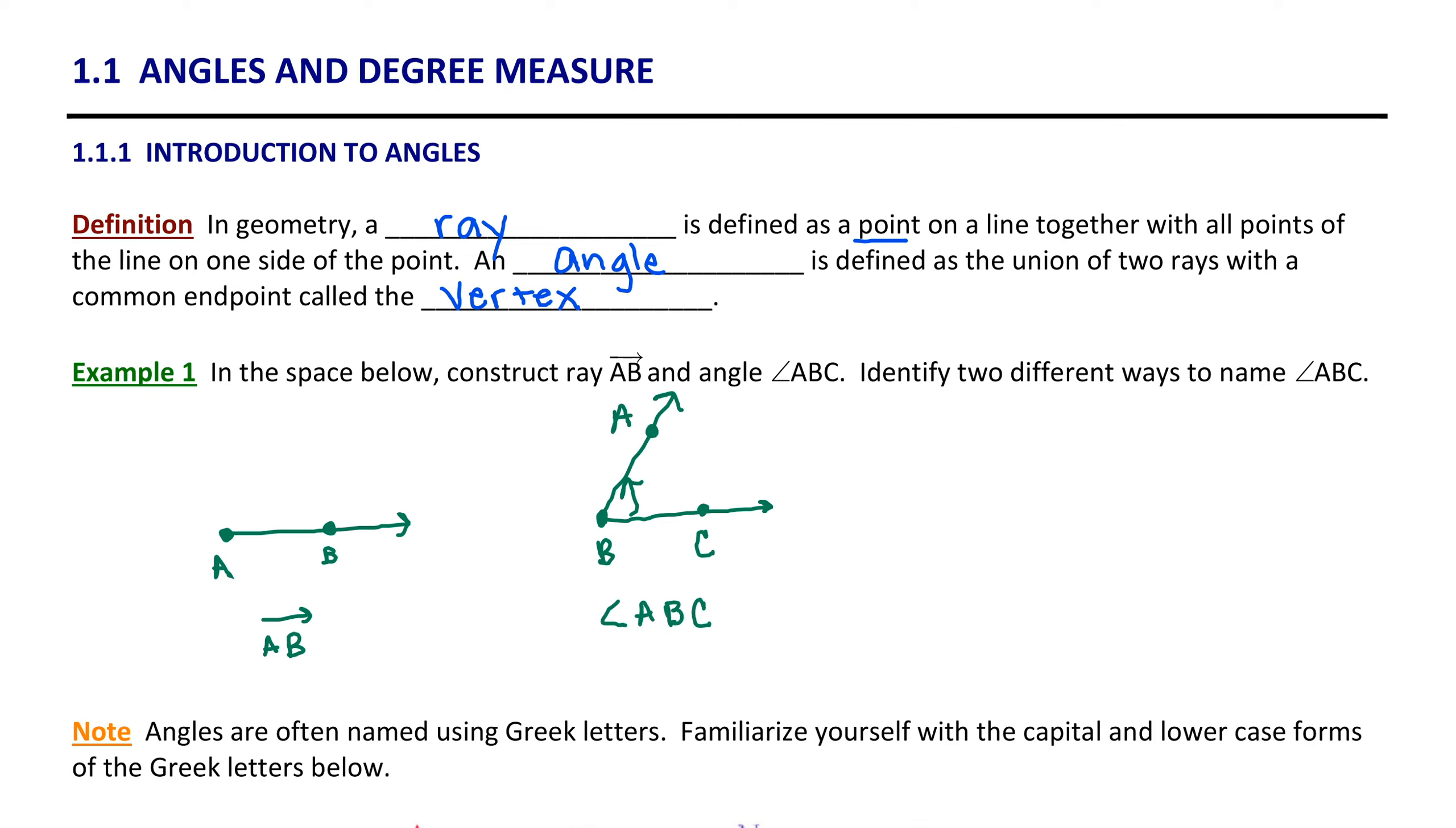Another way to name this angle is simply by using the vertex in the middle. We could also call this angle B, or we could name it in the other direction, angle CBA. The vertex B is the focus of naming that angle.